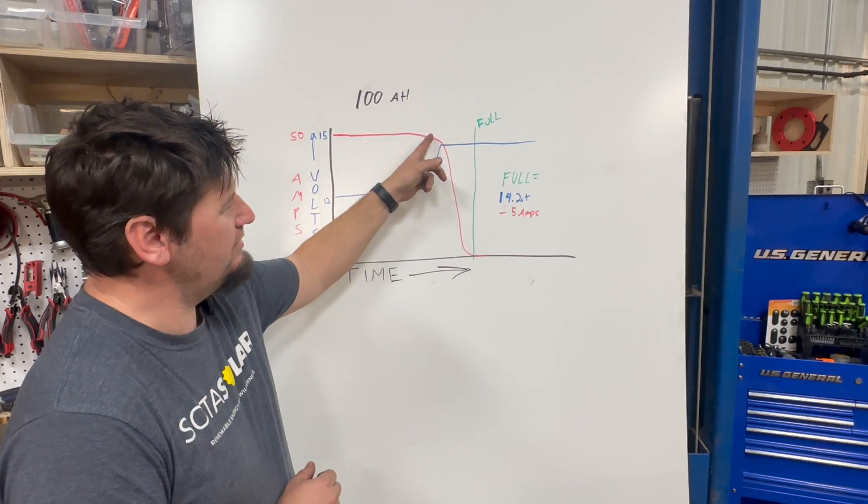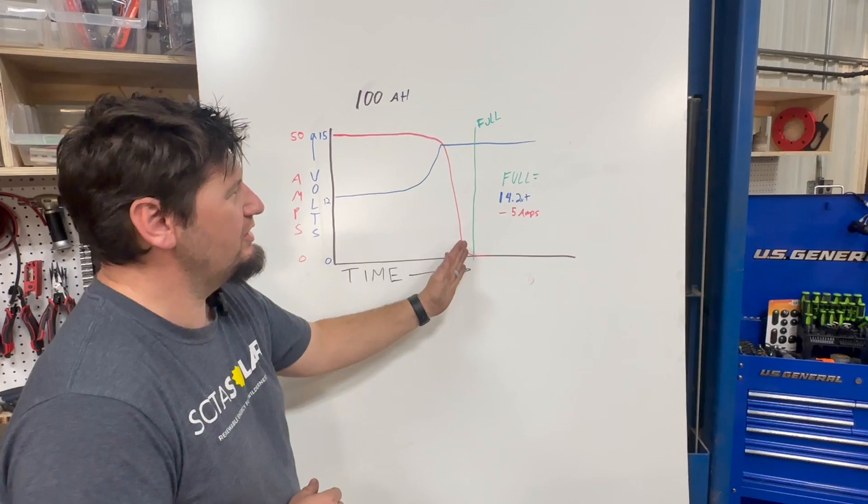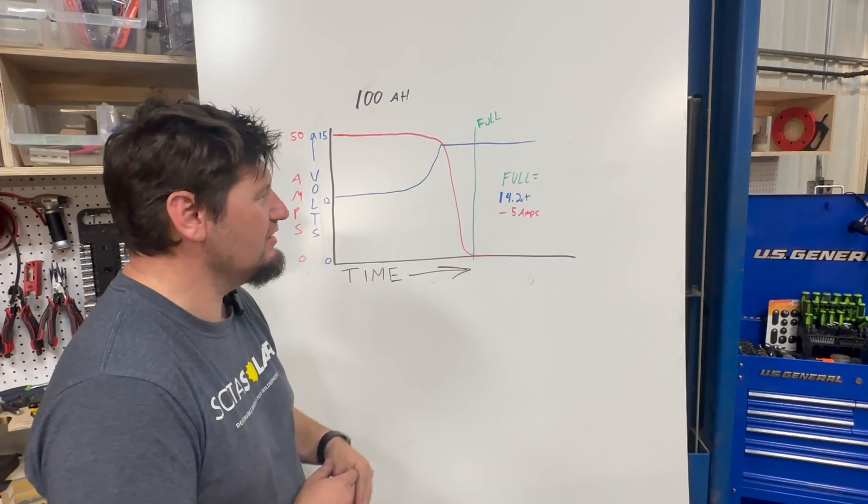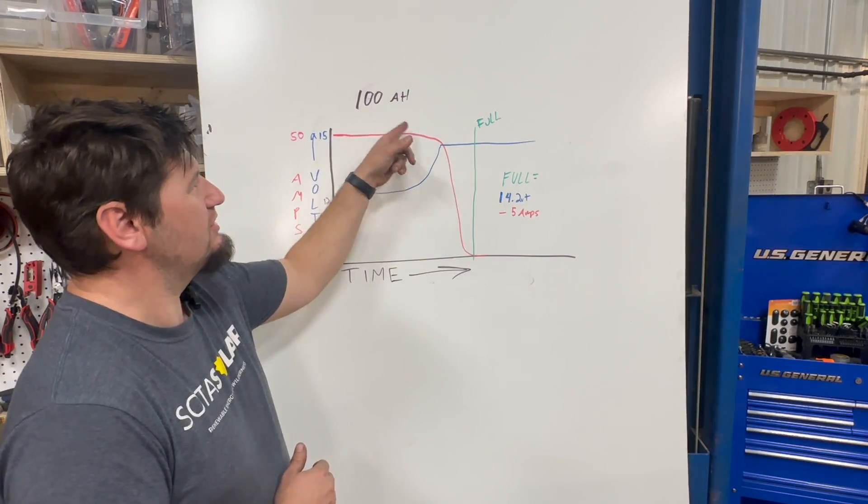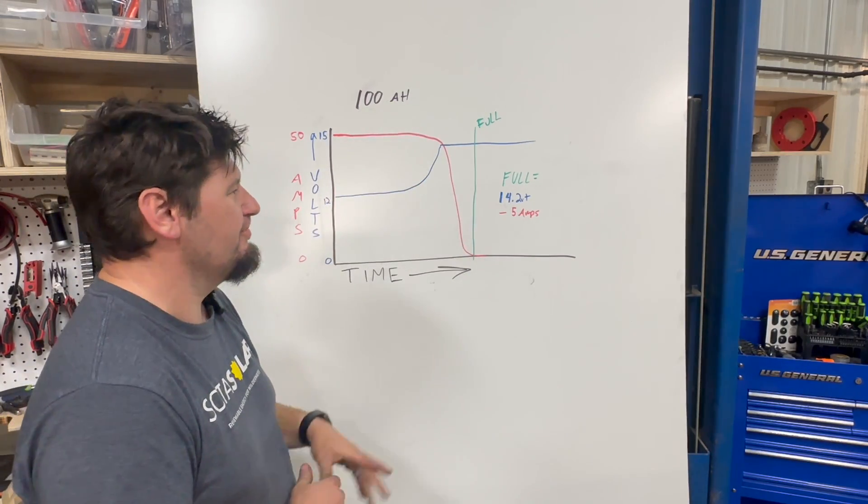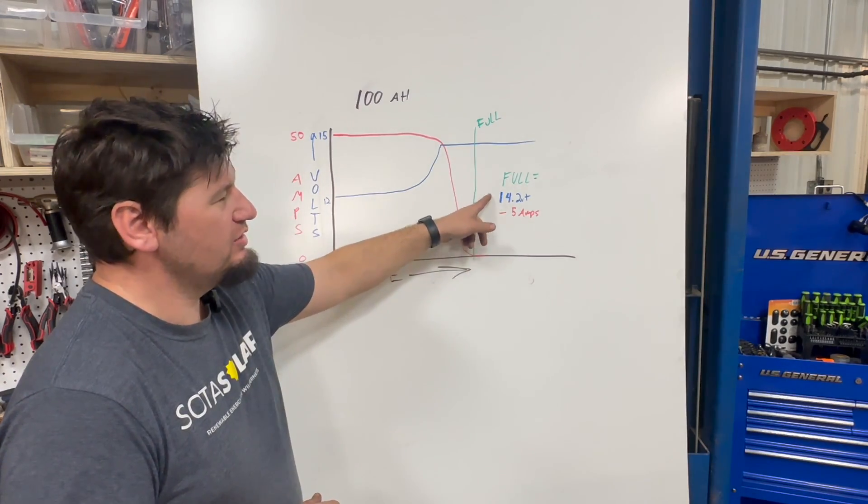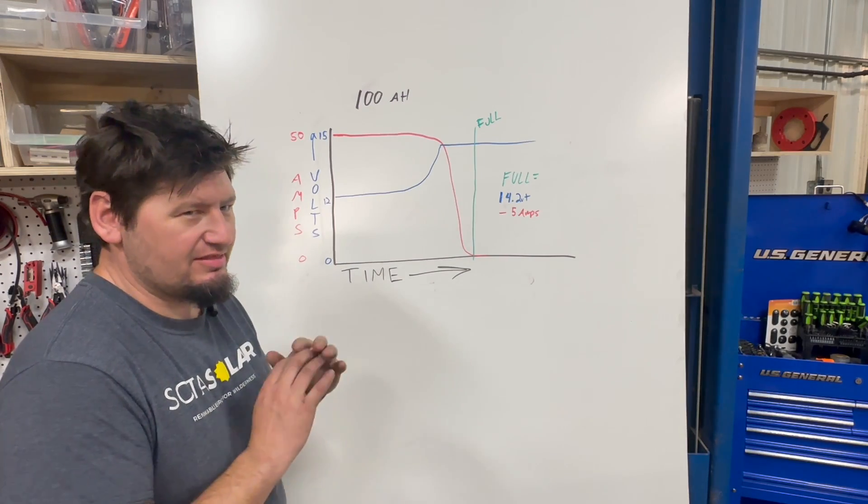And at the same time as it climbs, the amps are going to fall very quickly. And that is when it is full. When the volts are 14.2 volts or higher and the amps are less than five amps into the battery, if we are talking about a 100 amp hour battery. Typically the amps goes to zero real quick. When these two conditions are met, your battery monitor is going to think it's full.